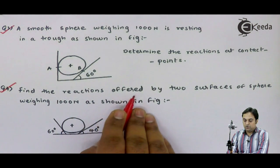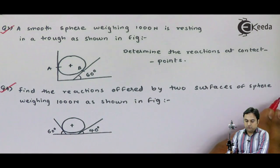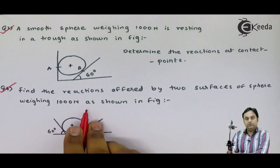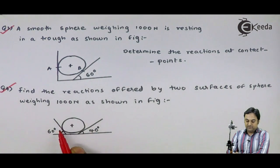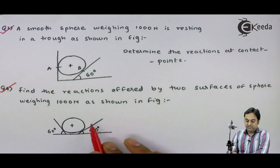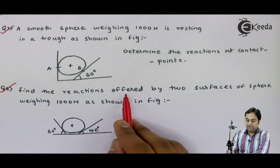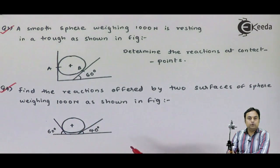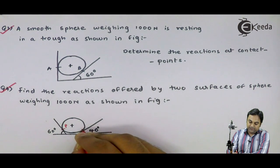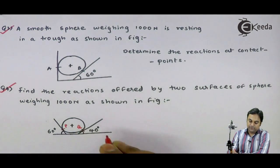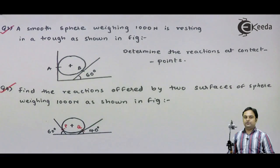Find the reactions offered by two surfaces of sphere weighing 1000 Newton as shown in figure. A sphere is resting between two planes, one inclined at 40 degrees, the other at 60 degrees. We have to calculate the reactions offered by both planes. The 60 degree plane contact point is P, and 40 degree plane contact point is Q. I'll write the data for this question first.